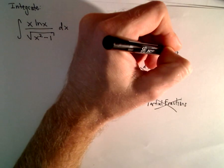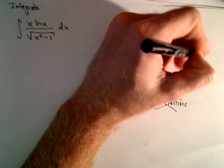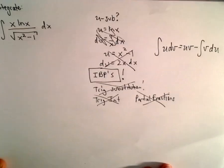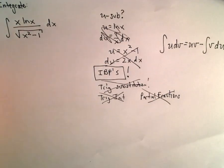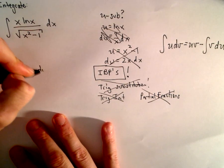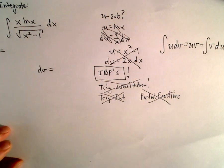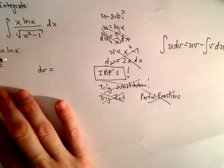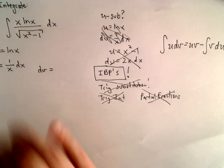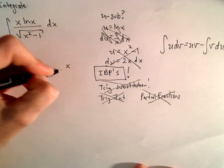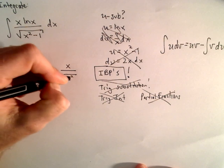Remember the integration by parts formula: ∫u dv = uv - ∫v du. So we've got to pick something to be u and something to be dv. I would certainly pick u to be ln(x), so du is 1/x dx. And the rest of it — dv — would have to be x over the square root of x² minus 1, dx.